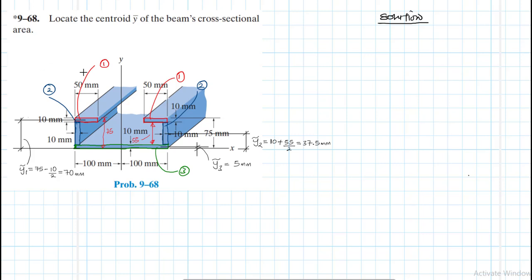So let's now find the areas, the area for each one. Area 1, they are in pairs, so we'll say 2 times 50 times 10. This gives us 1000 mm squared.